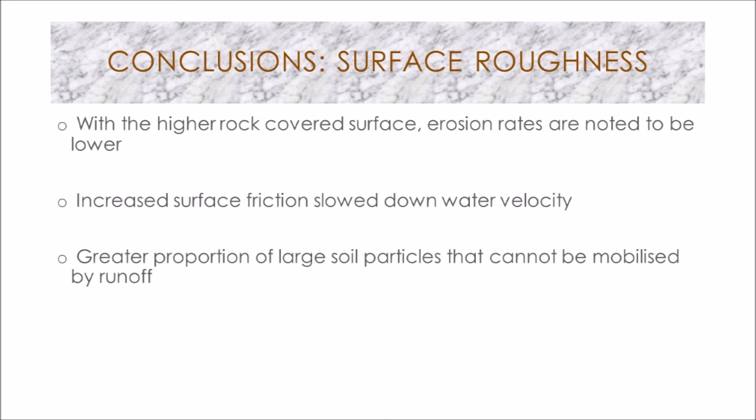In conclusion, for the surface roughness experiment, higher rock cover resulted in notably lower surface erosion rates due to the effects of rocks on soil hydrology — increasing friction, slowing down water velocity, and meaning that a greater proportion of large particles cannot be mobilized by runoff. With higher rock cover, less erosion will occur overall.